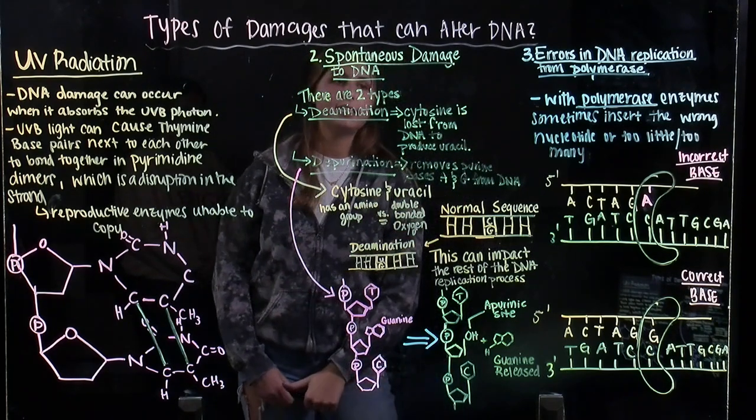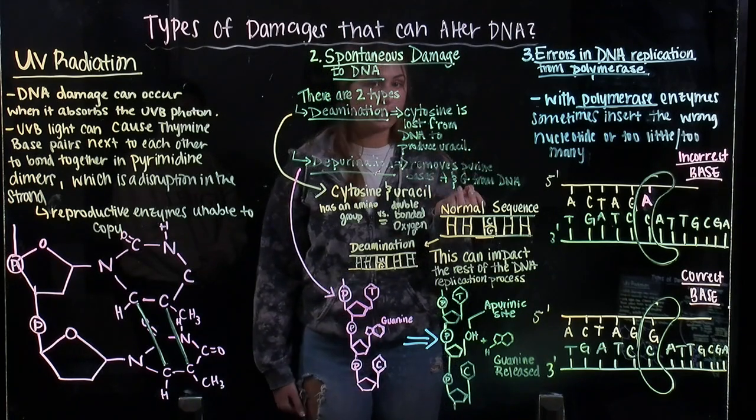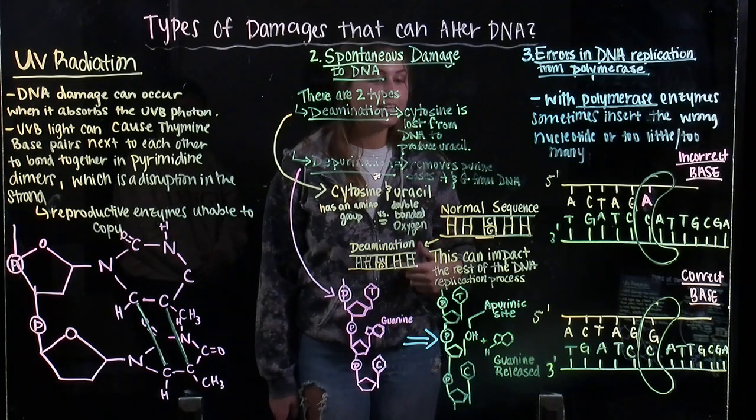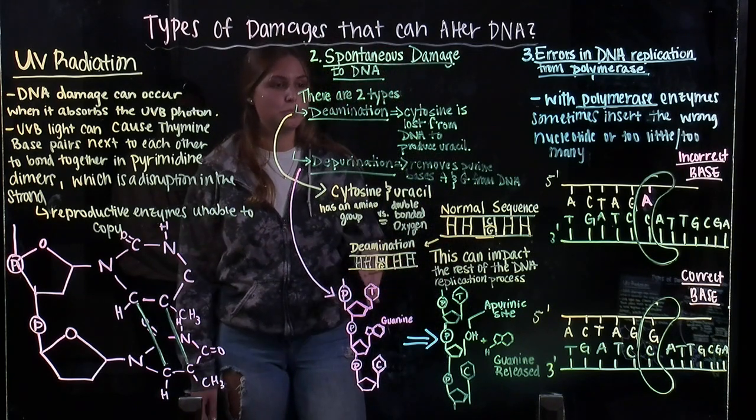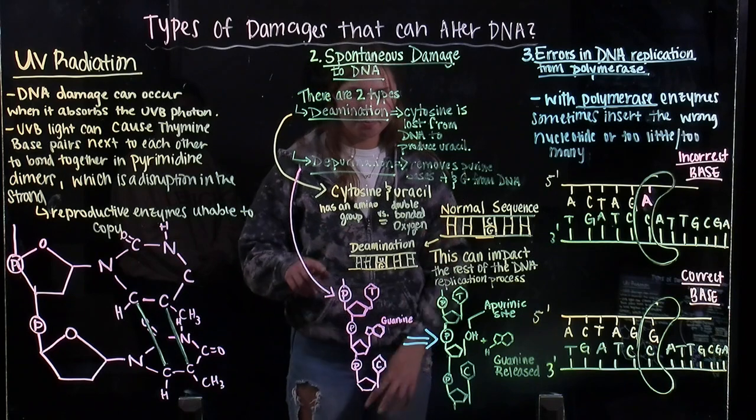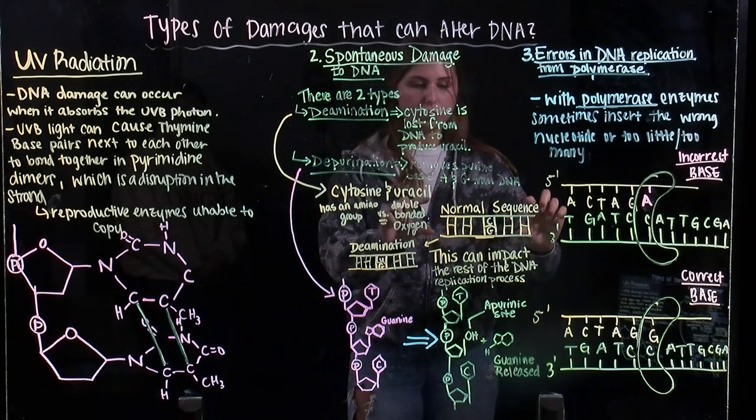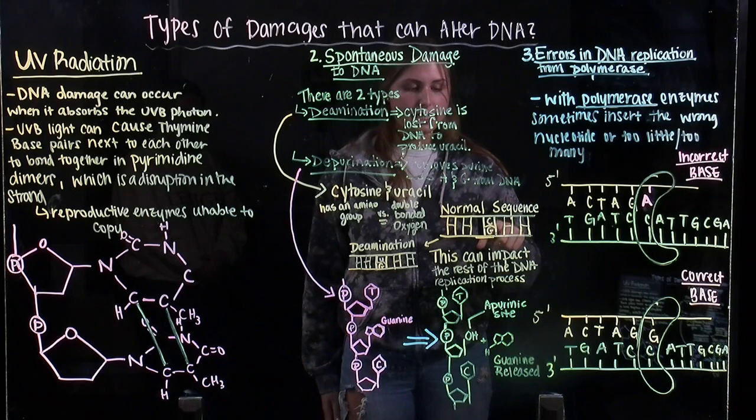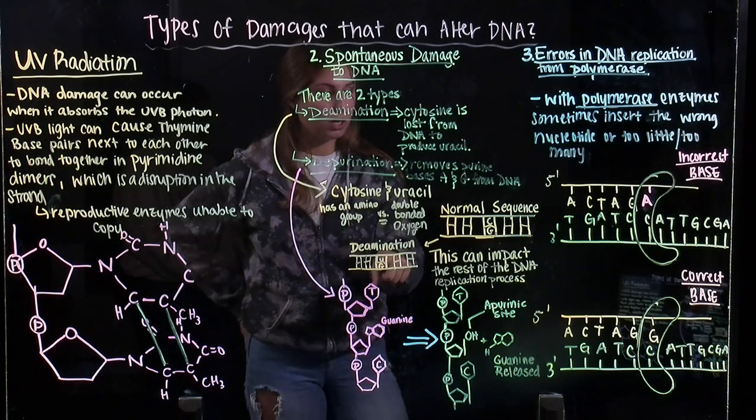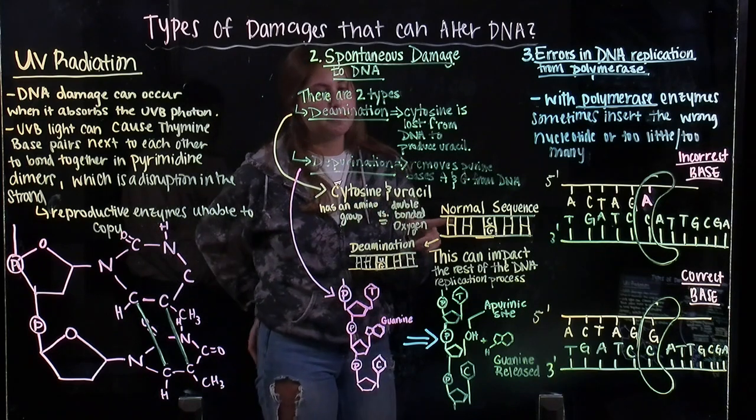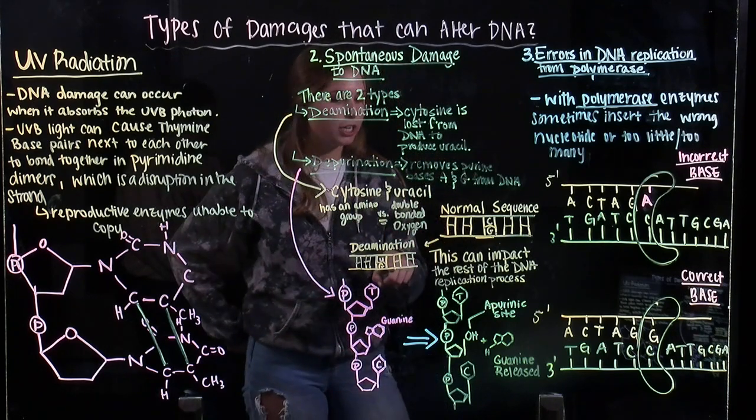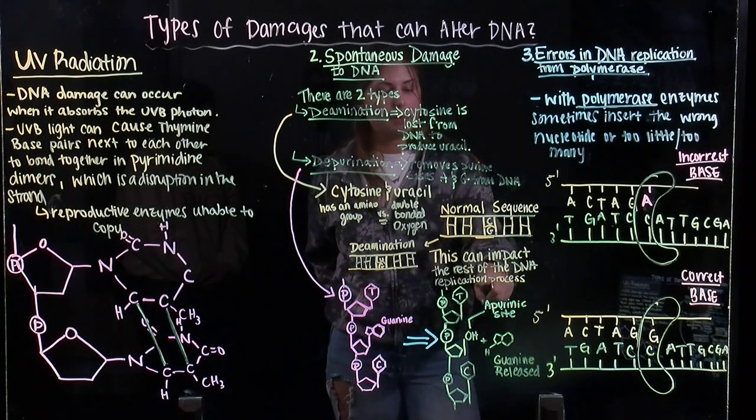In deamination, the cytosine is lost from DNA to produce uracil instead. In depurination, either an adenine or a guanine-based purine are removed from the DNA sequence. Let's examine the first type, which is deamination. As you can see, this is your normal sequence, which contains a cytosine and guanine, and once the process of deamination occurs, you're left with a uracil and a guanine. The cytosine and uracil differ by the fact that cytosine has an amino group, while uracil has a double bonded oxygen. This can impact the rest of the DNA replication process.